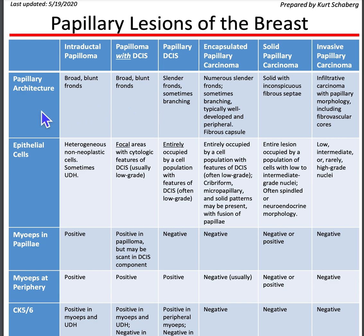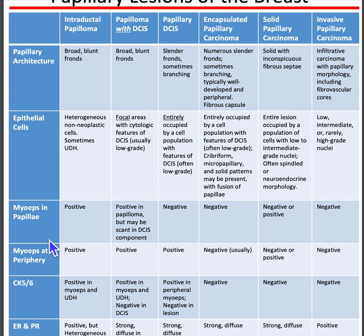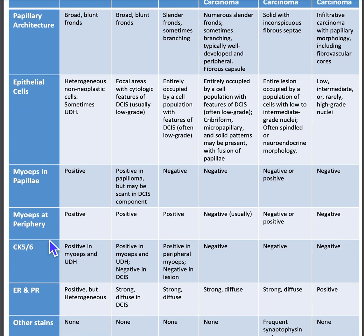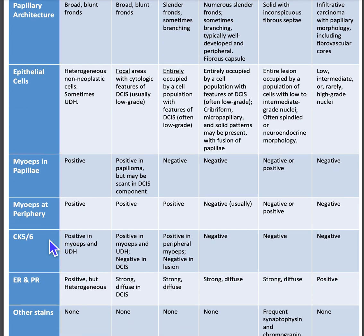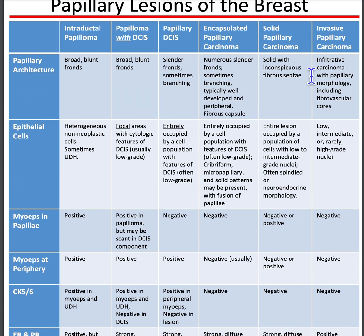You want to look at whether it's well-circumscribed or infiltrative. You want to look for whether there are myoepithelial cells within the lesion and around the periphery of the lesion. You can also do stains — ER/PR, as well as synaptophysin and chromogranin, which are neuroendocrine markers selectively positive for solid papillary carcinoma as opposed to the other five entities.